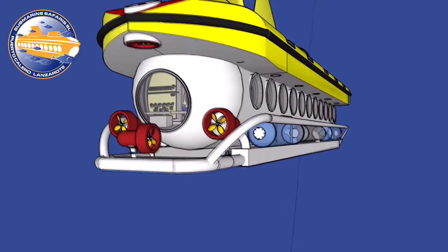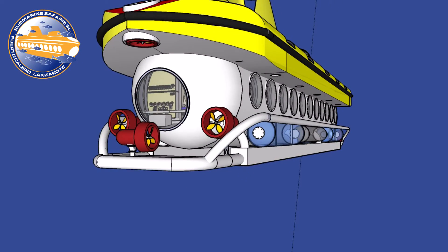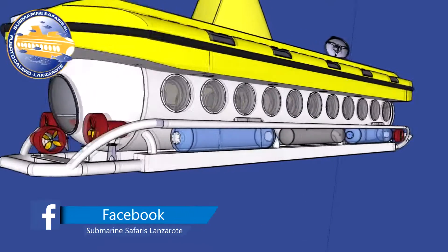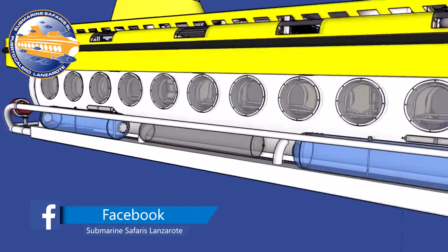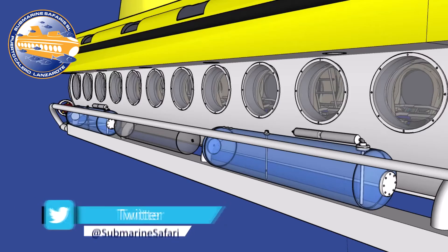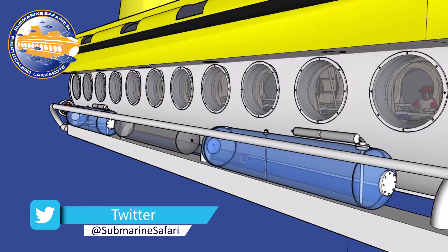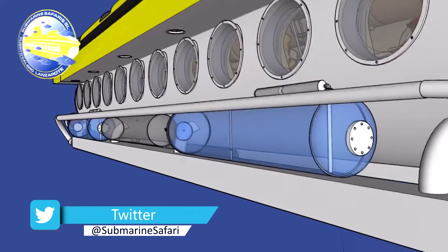There is a total of six thrusters, four at the rear and two at the front. The thrusters are configured two vertical, two lateral, and two for propulsion. Each thruster is 15 horsepower. The maximum speed of the submarine is 2.5 knots.